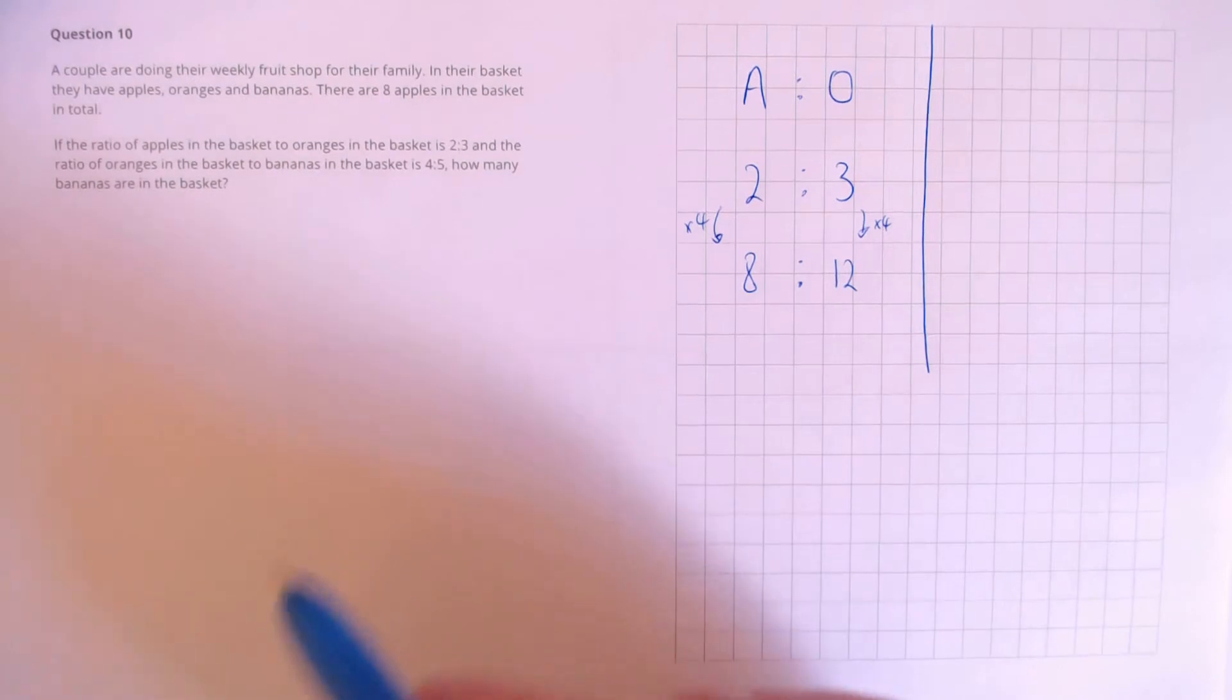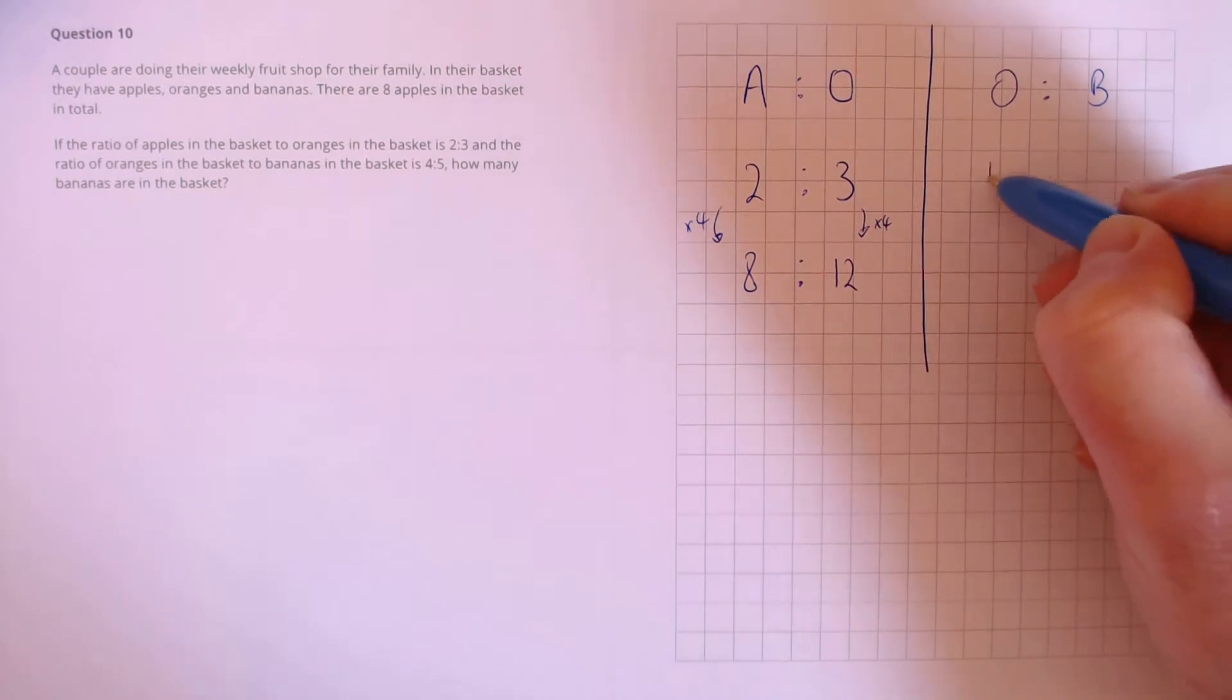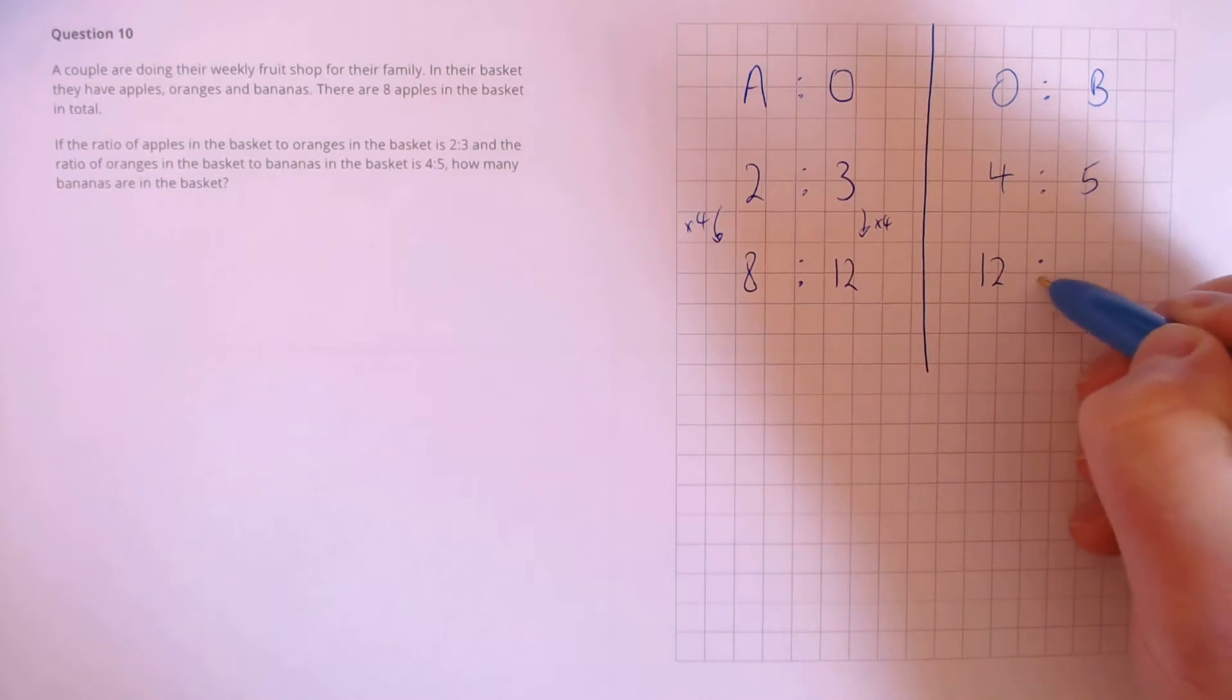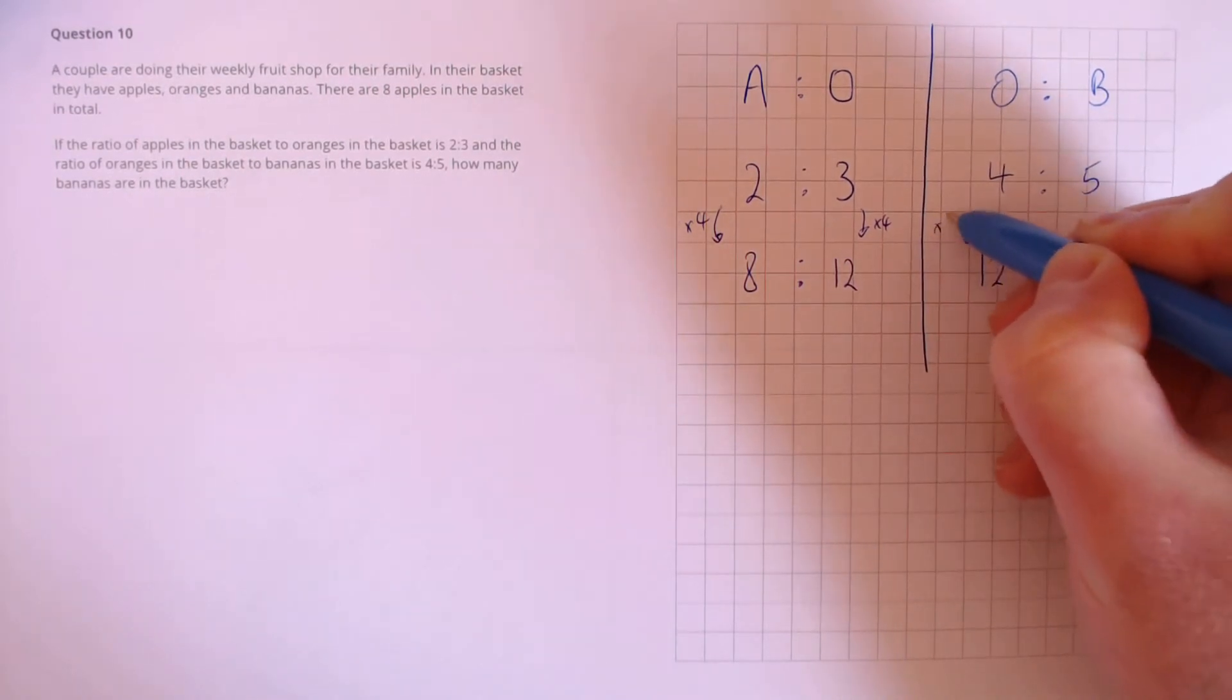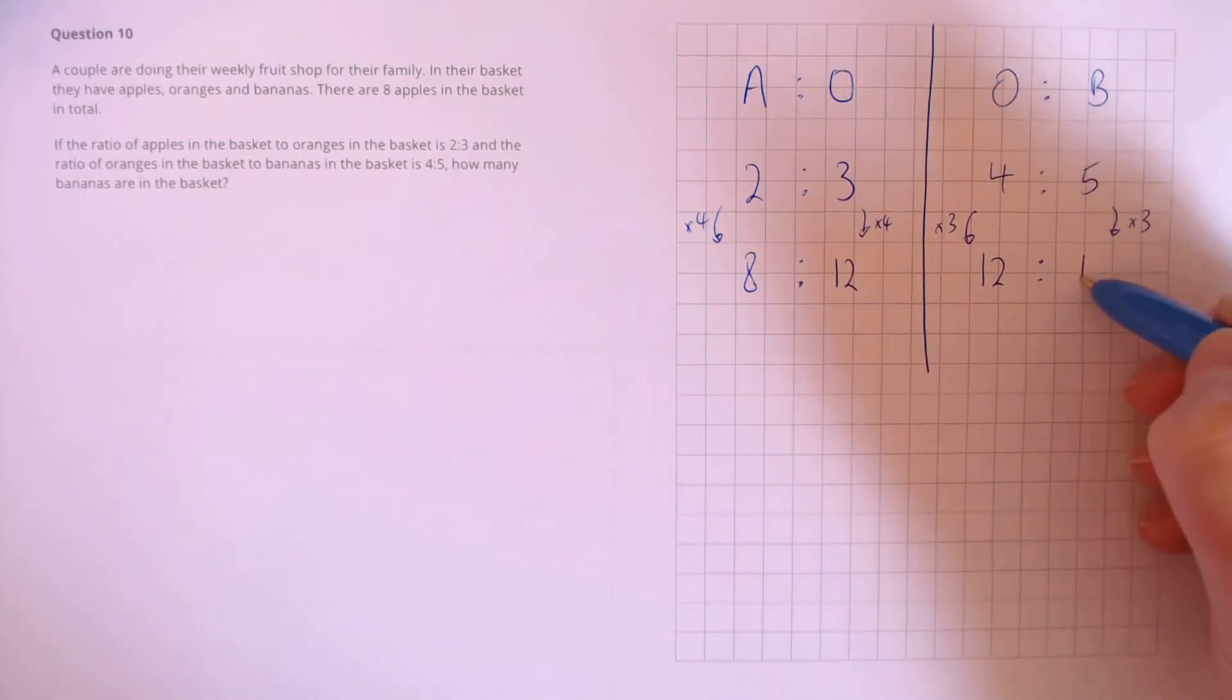Let's do the same thing but for bananas. So oranges to bananas is 4 to 5, and we know that there are 12 oranges in the basket. We've multiplied the ratio by 3, so we must do the same to the other side, which makes 15 bananas in the basket.